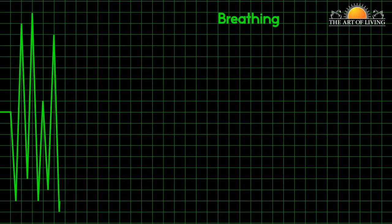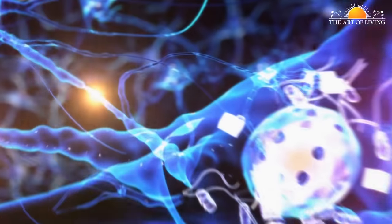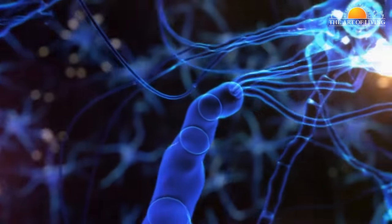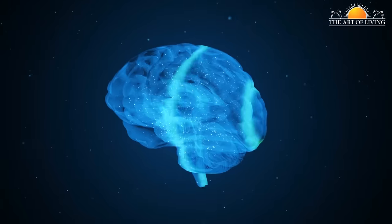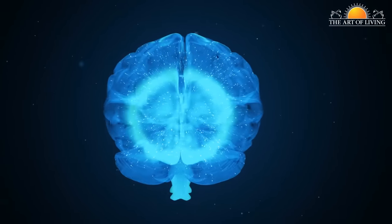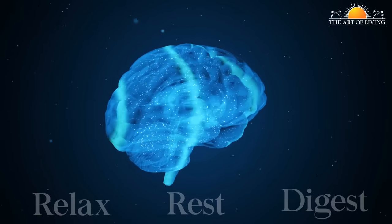When one undergoes Sudarshan Kriya Yoga, their breathing and heart rate slow down. The vagus nerve then gathers a signal from multiple organs from the body, notes that things must be calm and restful. It then passes on this message to the brain, which will listen and then allow us to relax, rest and digest.